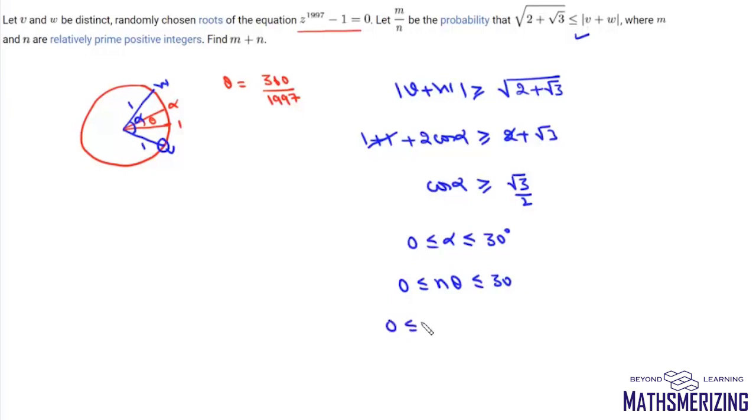So we have n theta equals 360 upon 1997, which is less than or equal to 30. When we simplify this, we get the value of n between 0 and 166.41. We cannot take 0 because then it will be the same root, and n has to be an integer. So we can choose this other root in 166 ways for this to be true.